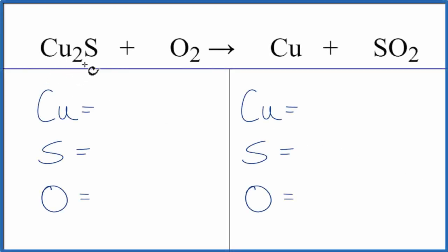To balance this equation, Cu2S plus O2, let's count the atoms up on each side of the equation. We have two copper atoms, one sulfur, and then two oxygens.